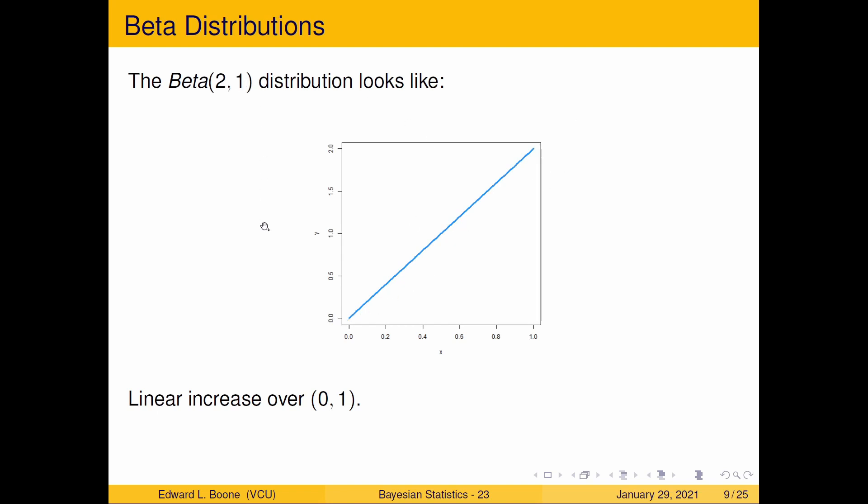A beta(1,2) is a linear decrease—just flips it around. You're going to see a symmetry in these. What these numbers do, there's going to be an interesting symmetry about them.